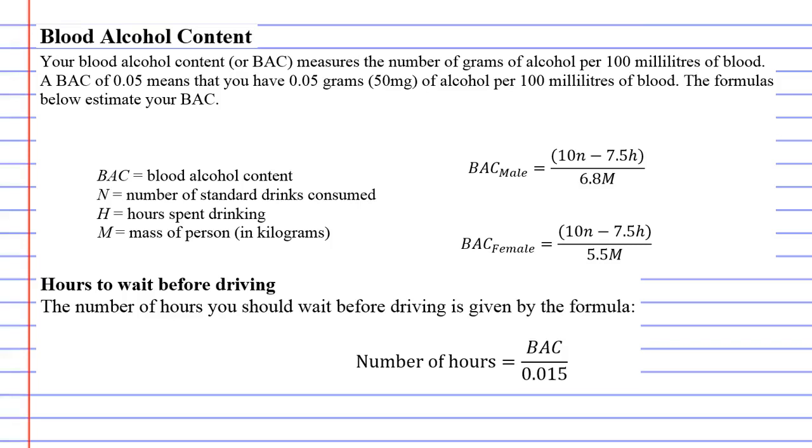Blood alcohol content. Your blood alcohol content or BAC measures the number of grams of alcohol per 100 milliliters of blood. A BAC of 0.05 means that you have 0.05 grams, equivalent to 50 milligrams of alcohol per 100 milliliters of blood.